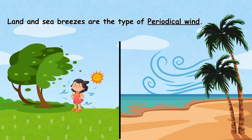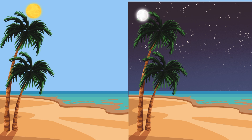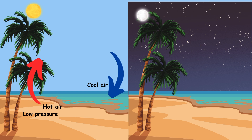Land and sea breezes are types of periodical wind. During the daytime the land heats up faster than the sea, which results in hot air formation on the land. This hot air rises up, creating a low pressure on the land. On the contrary, the air above the sea is relatively cooler as water takes more time to heat up. As the cool air on the sea cannot rise up due to high density, it develops high pressure on the sea. Therefore, during daytime the air flows from sea to land — this is known as the sea breeze.